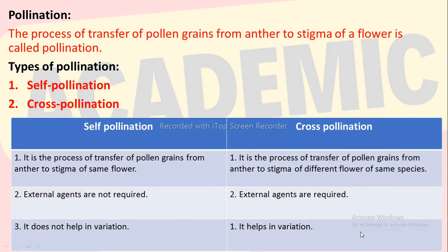Differences between self-pollination and cross-pollination. Self-pollination is the process of transfer of pollen grains from anther to stigma of the same flower. Whereas cross-pollination is the process of transfer of pollen grains from anther to stigma of a different flower of the same species. For self-pollination, external agents are not required; whereas for cross-pollination, external agents are required. Self-pollination does not help in variation, whereas cross-pollination helps in variation.